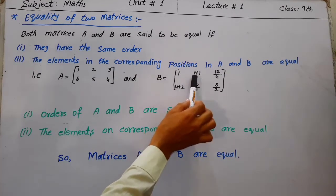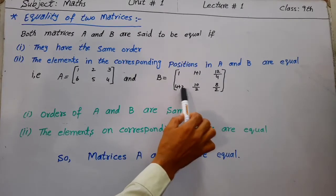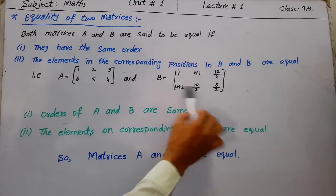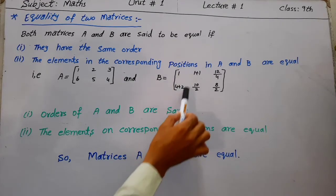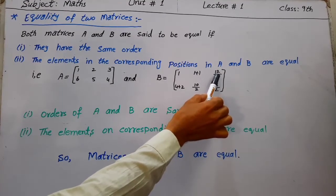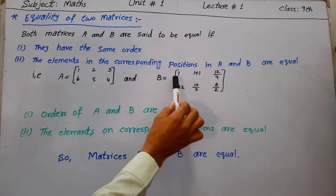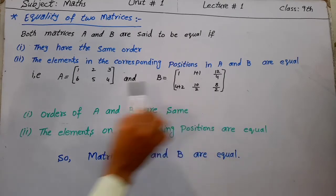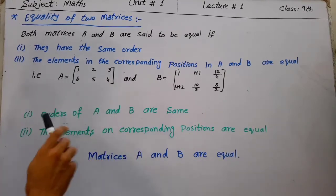Matrix B is [1 (1+1) (fell by 4); (4+2) (10/2) (8/2)]. Looking at the rows and columns, B also has order 2 by 3. Since the orders of A and B are the same, the first condition for equality is satisfied.